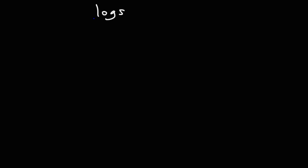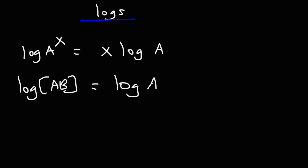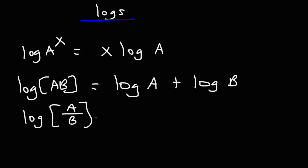Now let's talk about the properties of logarithms. For log of a raised to the x, you can move the exponent to the front: it's equivalent to x times log a. Log of (a times b) can be separated into a sum: log a plus log b. Log of (a over b) can be broken into a difference: log a minus log b.